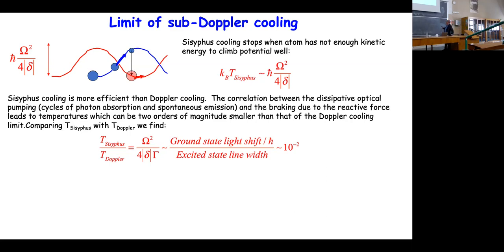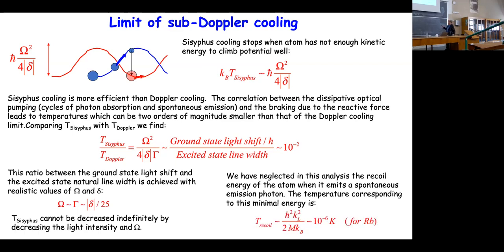One might think that bringing Ω to zero would reach absolute zero, but there is a fundamental lower limit — the recoil limit. At some point the atom can no longer reach the next potential summit and light interaction stops, but the last scattered photon imparts a recoil energy of order ℏ²k²/2m. This recoil temperature is about one microkelvin for rubidium. The combination of dissipative and reactive forces can thus cool atoms down to approximately one microkelvin.